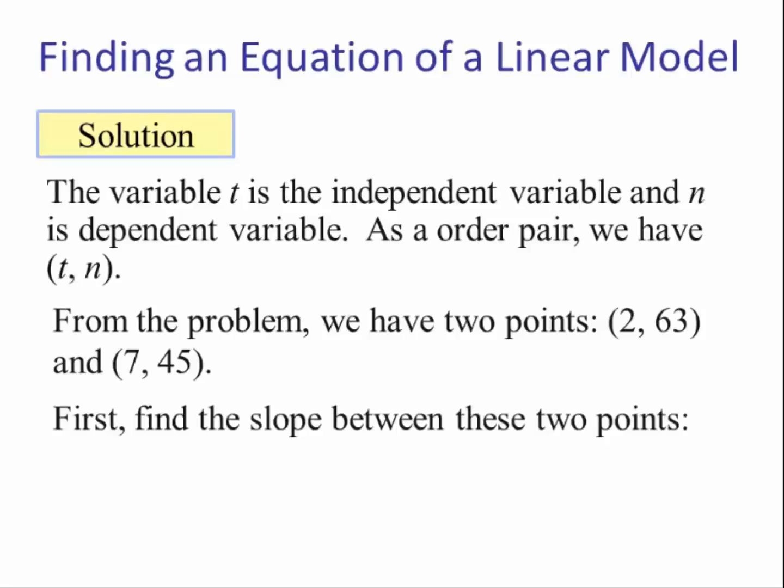We first want to find the slope between these two points. The slope is the difference of the Y's over the difference of the X's, and we end up with negative 18 over 5, which becomes negative 3.6.